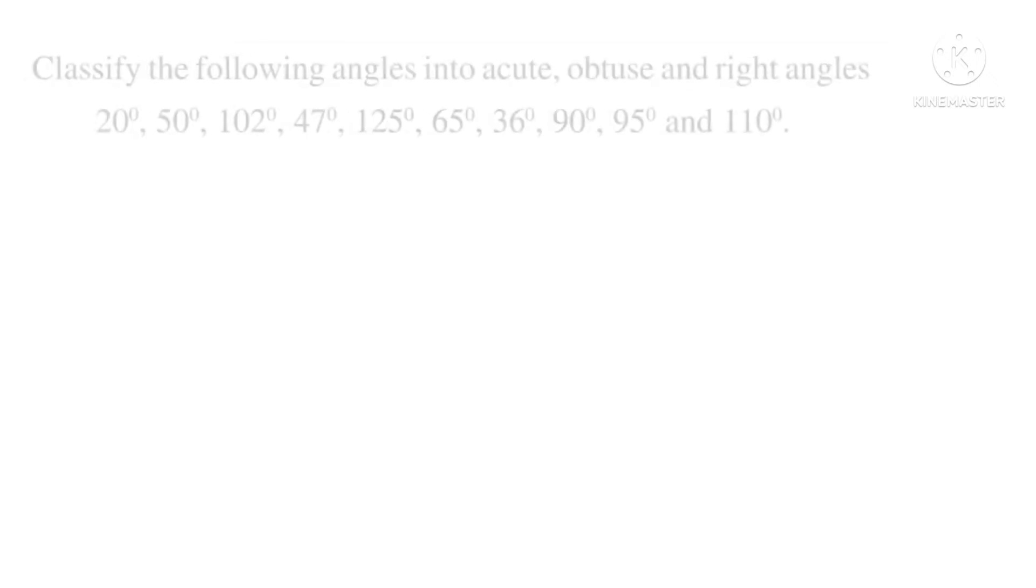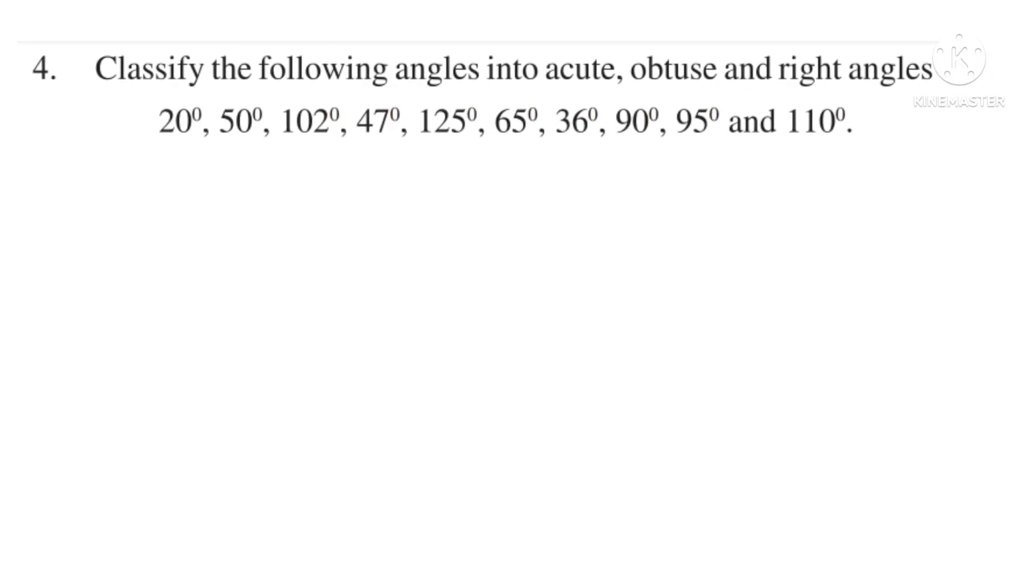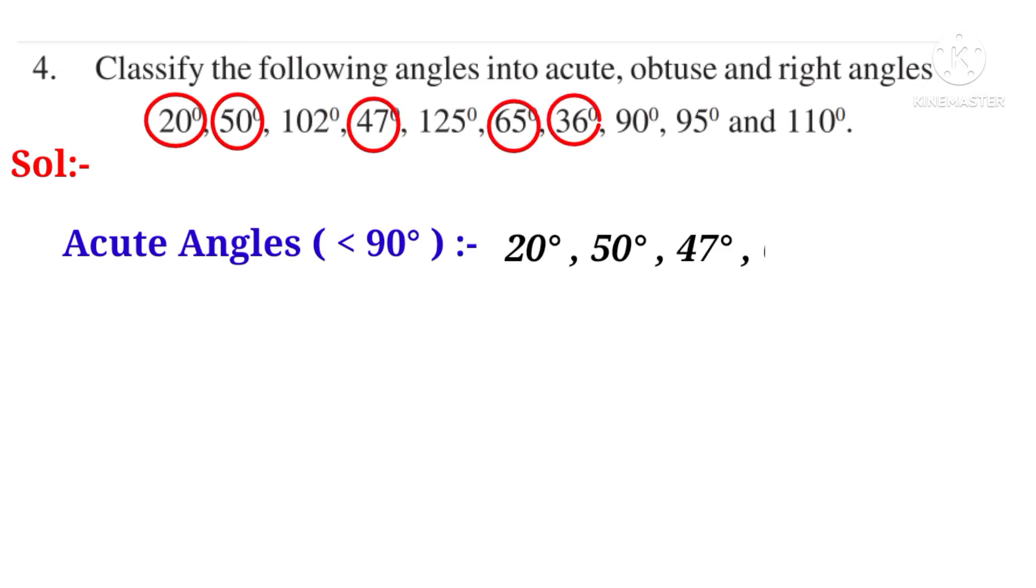Now let us answer the fourth question. Classify the following angles into acute, obtuse and right angles. Solution. Acute angles are the angles which are less than 90 degrees. They are 20 degrees, 50 degrees, 47 degrees, 65 degrees and 36 degrees.